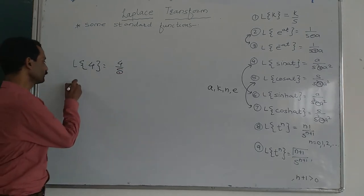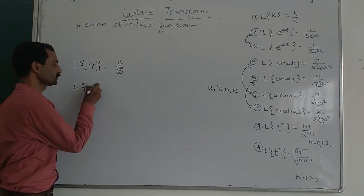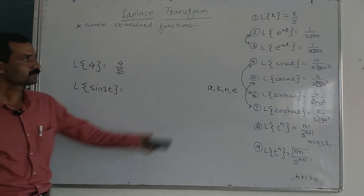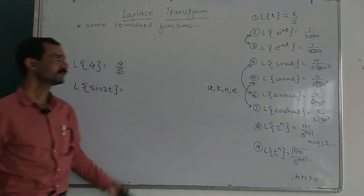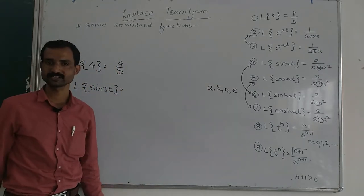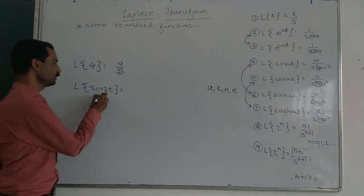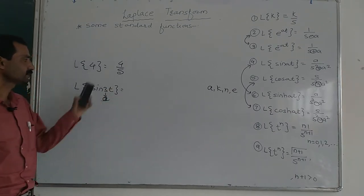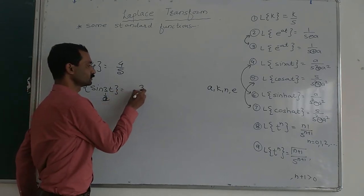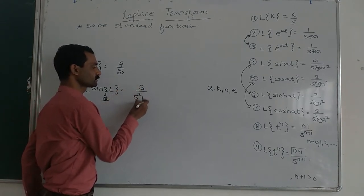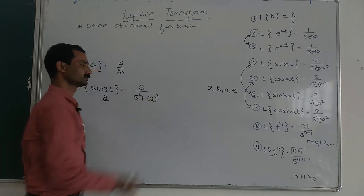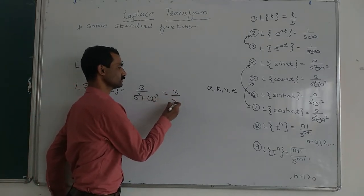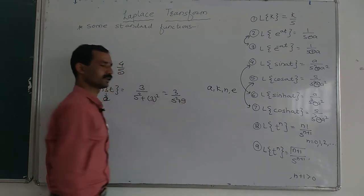Suppose we have to find Laplace of sin(3t). We use formula number 4: Laplace of sin(at) is equal to a upon s squared plus a squared. Here a equals 3, so it becomes 3 upon s squared plus 9.